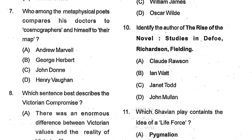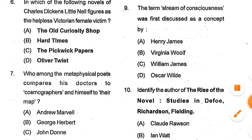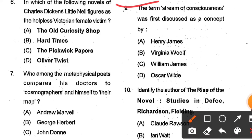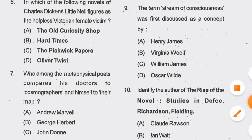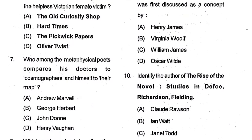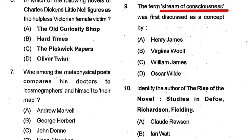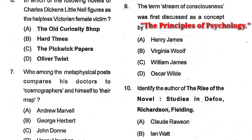Question number 9: The term 'stream of consciousness' was first discussed as a concept by whom? Options: Henry James, Virginia Woolf, William James, and Oscar Wilde. Option C, William James, is the correct answer. The term 'stream of consciousness' is mentioned in the book The Principles of Psychology, published in the year 1890.